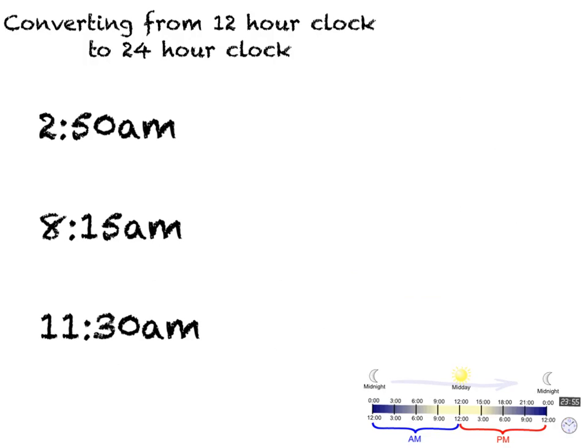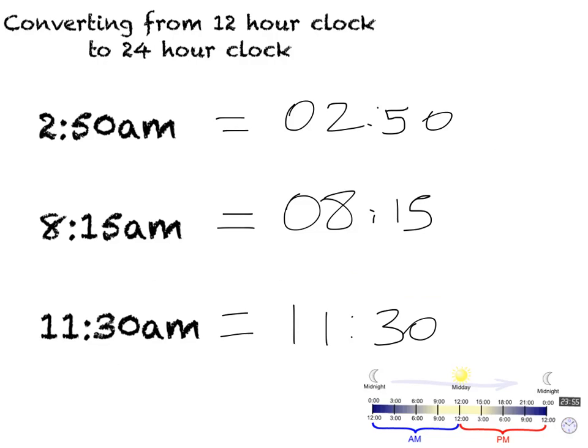And just to remind you that times that are in AM don't change at all. So 2:50 AM is the same as 02:50 hours. It wouldn't need an AM or PM. 8:15 would be 08:15 hours and 11:30 AM would be 11:30 hours. No change is necessary for the morning times.